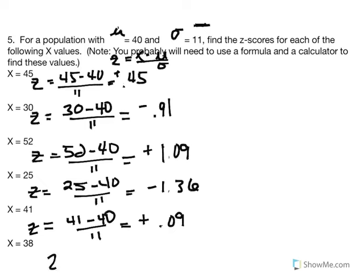Lastly, z equals 38 minus 40 divided by 11. We should expect a negative z-score since 38 is less than the mean of 40. Divide by 11, and we get negative 0.18. The distance is two points below the mean; one standard deviation is equal to 11, so it's a very small fraction of one standard deviation unit.